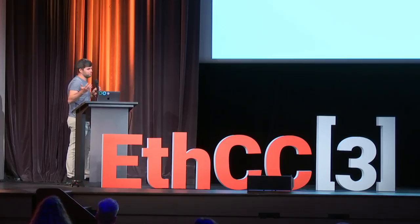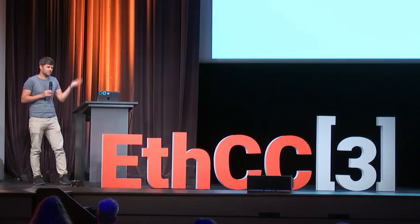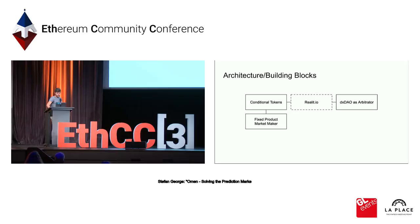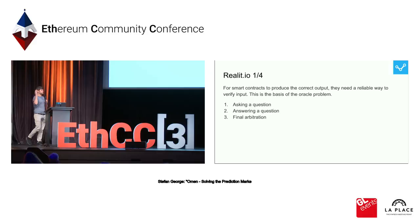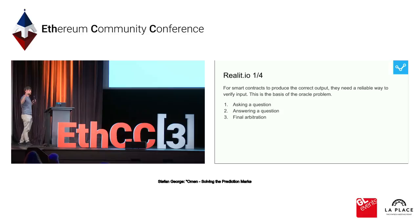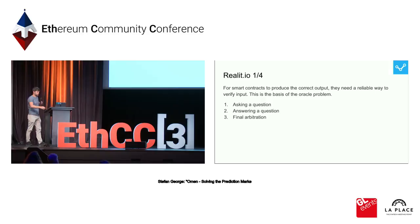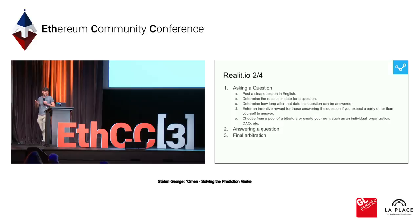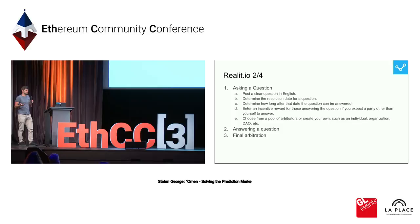We were looking into solutions to improve this, and one is the RealityIO platform. What it essentially does is a filter that allows anyone to ask questions and have a very simple mechanism to resolve them. Only if a result is contentious can you trigger a final arbitration using a more complex mechanism to resolve the market. There are three simple steps: first, post a clear unambiguous question in English to reality.io, define a resolution date, and optionally set an incentive. You also have to select a possible final arbitrator — in the case of OMEN, this is the DXDAO.